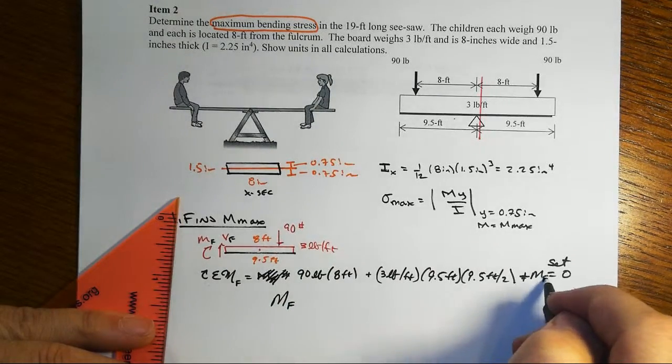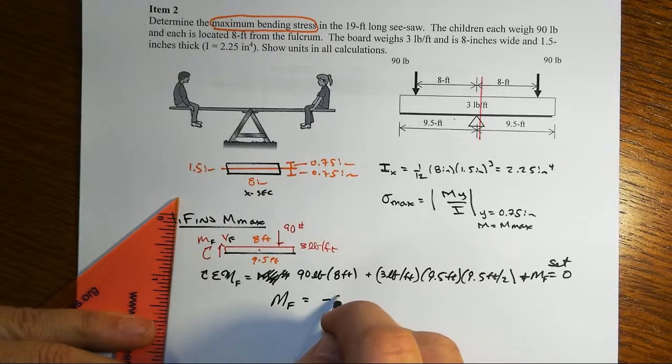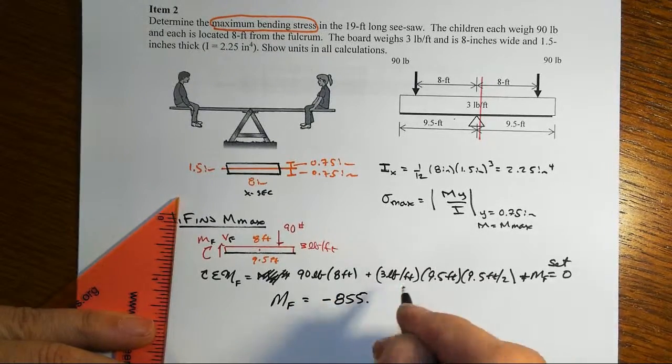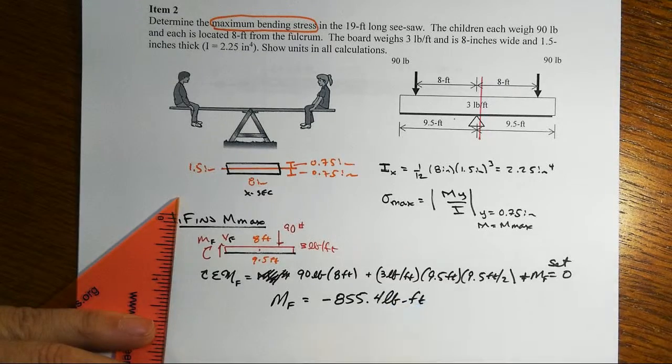MF then will be equal to minus 855.4 pound-feet.